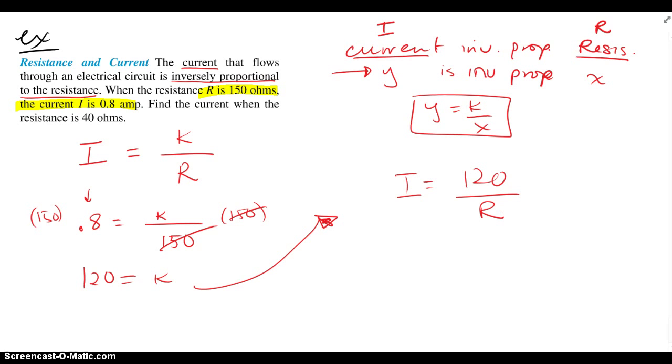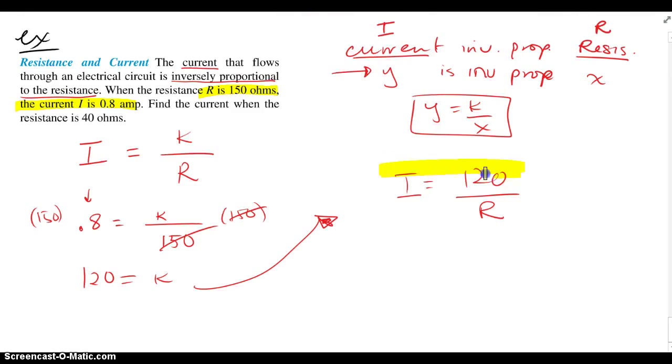Now with that, I can solve any piece of information they give me about I or R, and I can find the other missing piece. So now it says find the current, that must be I, if the resistance is 40 ohms. So I is what I don't know, and the resistance is 40 ohms. I'm going to simplify that and get 3. And the unit for current is amps. So 3 amps is what I have if the resistance is 40 ohms.